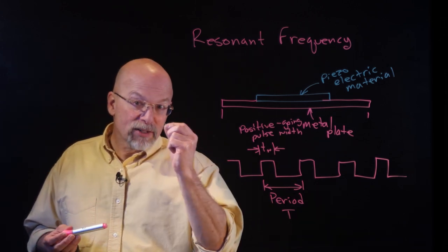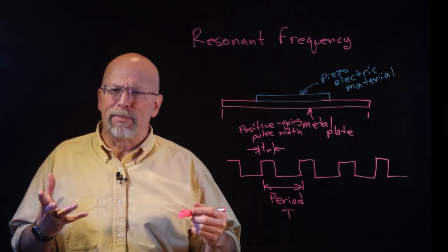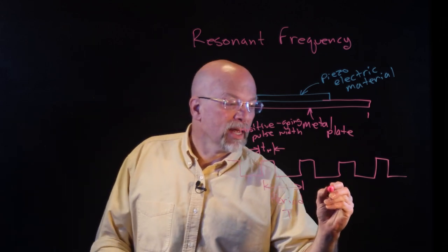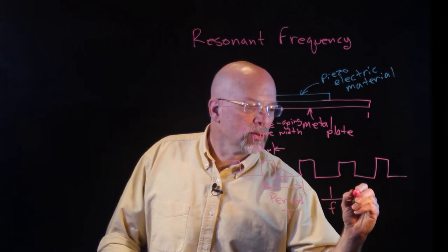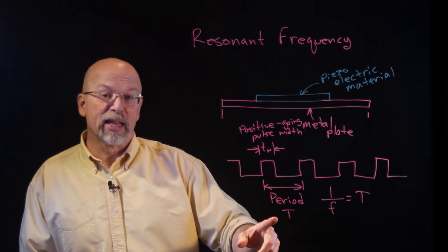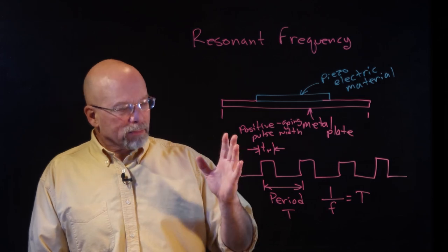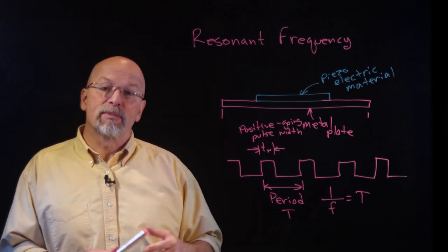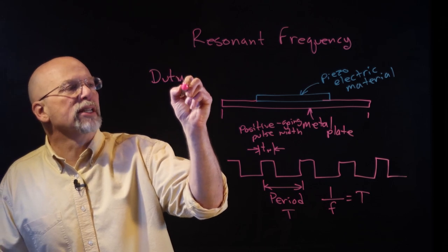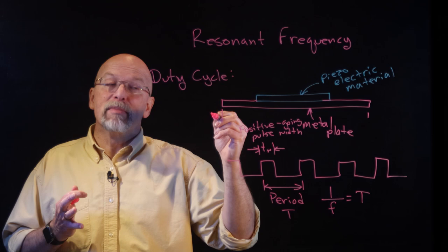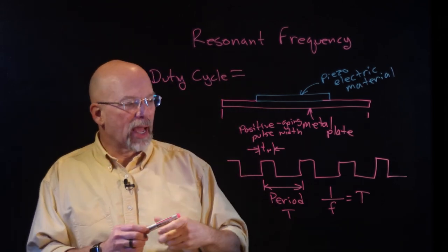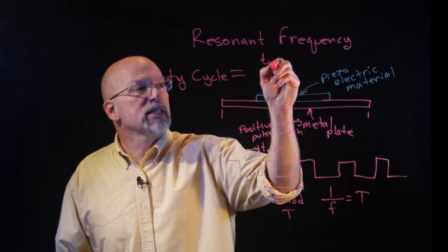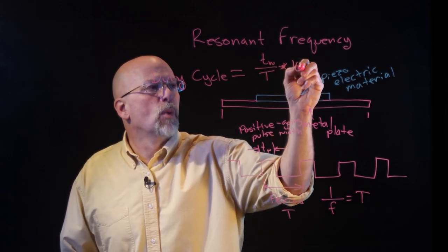Whenever we try and drive these little speakers, usually what you're looking for is a beep — something in the couple thousand to eight thousand hertz range. Taking one over the frequency gives you your period. The pulse width defines something called a duty cycle, which is a percentage — specifically the percentage of time the signal is a logic one over the whole period. So it's t sub W divided by T, times 100%.